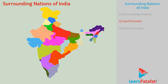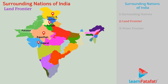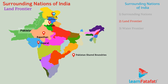Land Frontier. Here are the states that share the boundary of neighboring nations. Gujarat, Rajasthan, Punjab, and Jammu and Kashmir share the land boundary with Pakistan. Jammu and Kashmir shares the land boundary with Afghanistan.